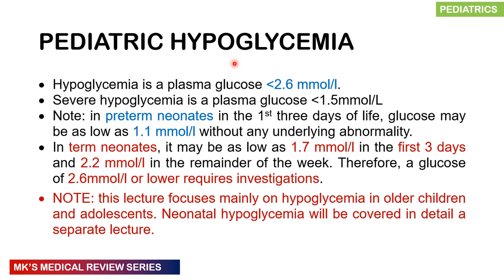When you talk about hypoglycemia, it's pretty much a plasma glucose less than 2.6 millimoles per liter. In some hospitals we use a higher threshold of 3 millimoles per liter. We consider severe hypoglycemia as a plasma glucose less than 1.5 millimoles per liter. In preterm neonates in the first three days of life, glucose may be as low as 1.1 mmol/L without any underlying abnormality. In term neonates it may be as low as 1.7 in the first three days and 2.2 in the remainder of the week. Therefore, anything lower than 2.6 should be thoroughly investigated.